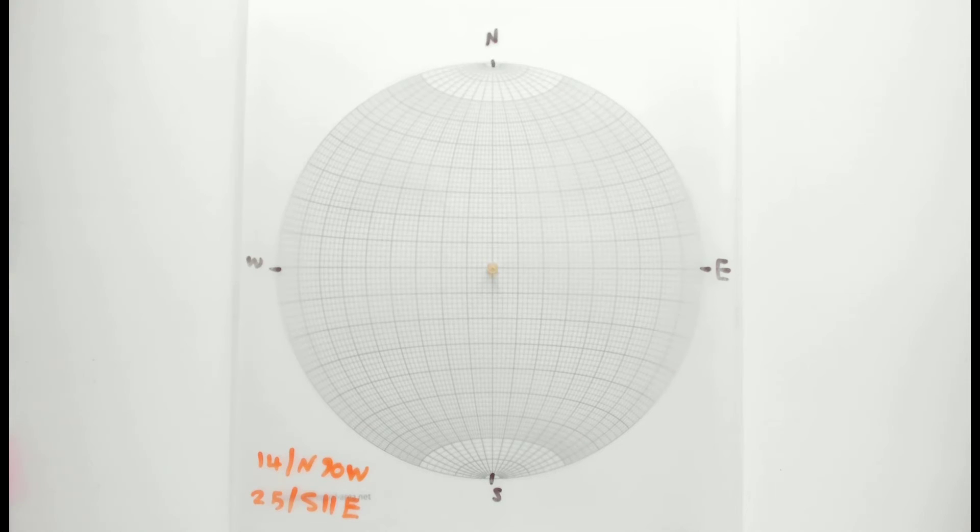We have two apparent dips that I have here: 14 slash N90W and 25 slash S11E. As you know, apparent dips themselves are a linear feature, so you're actually reading the attitude of the plane along a single line, and that is going to end up to be a point on a stereonet.